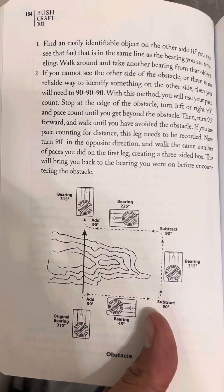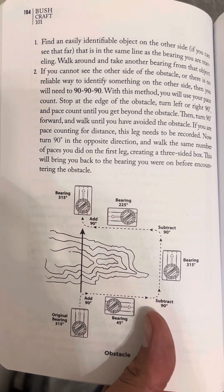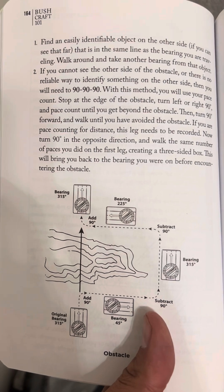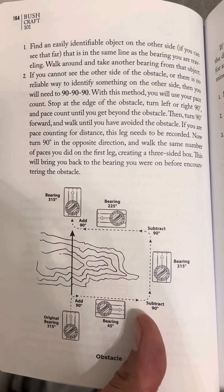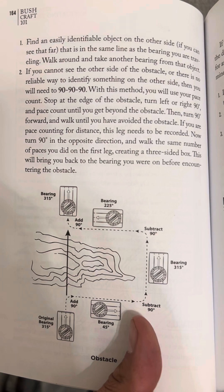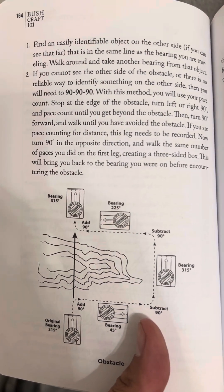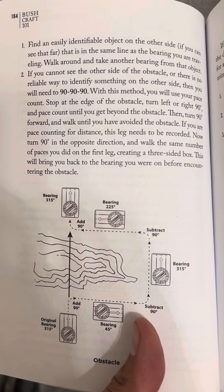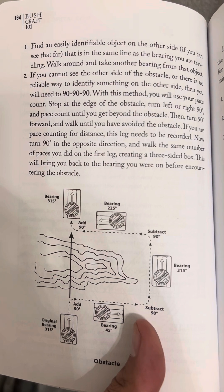Bushcraft 101, page 164. Number one: find an easily identifiable object on the other side, if you can see that far, that is in the same line as the bearing you are traveling.